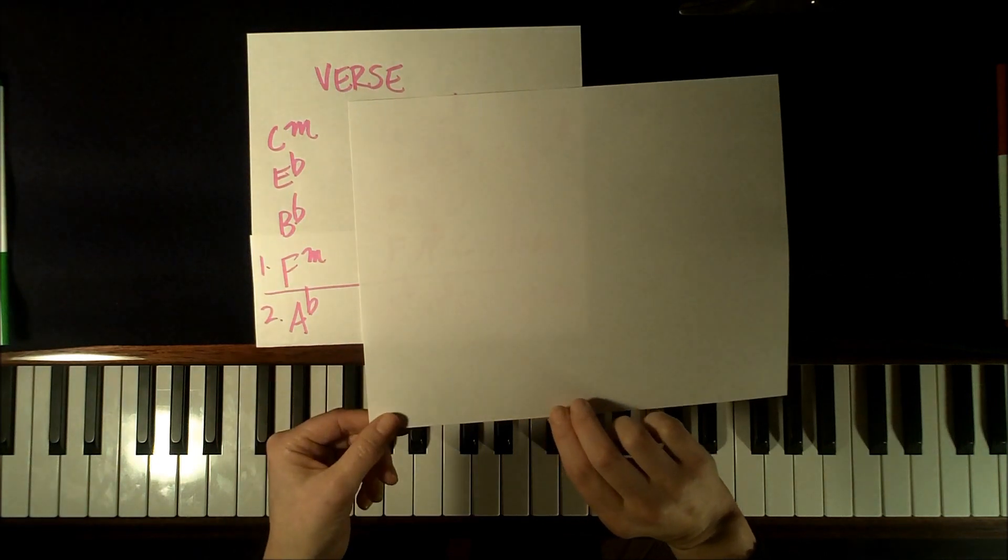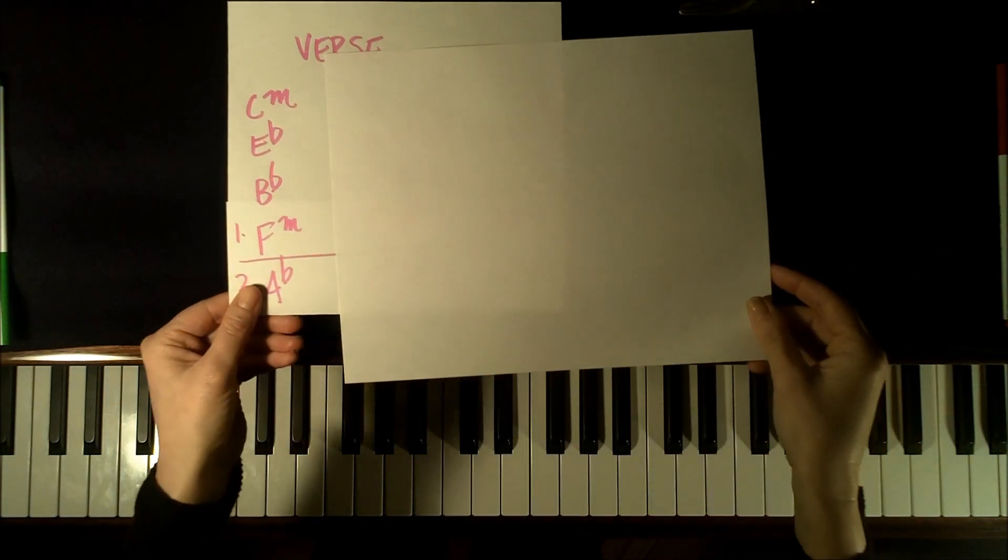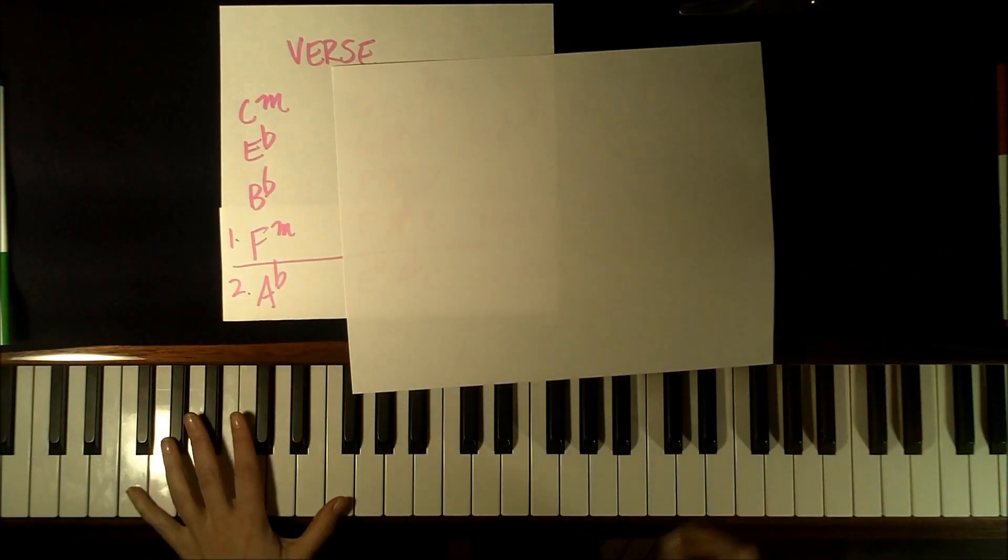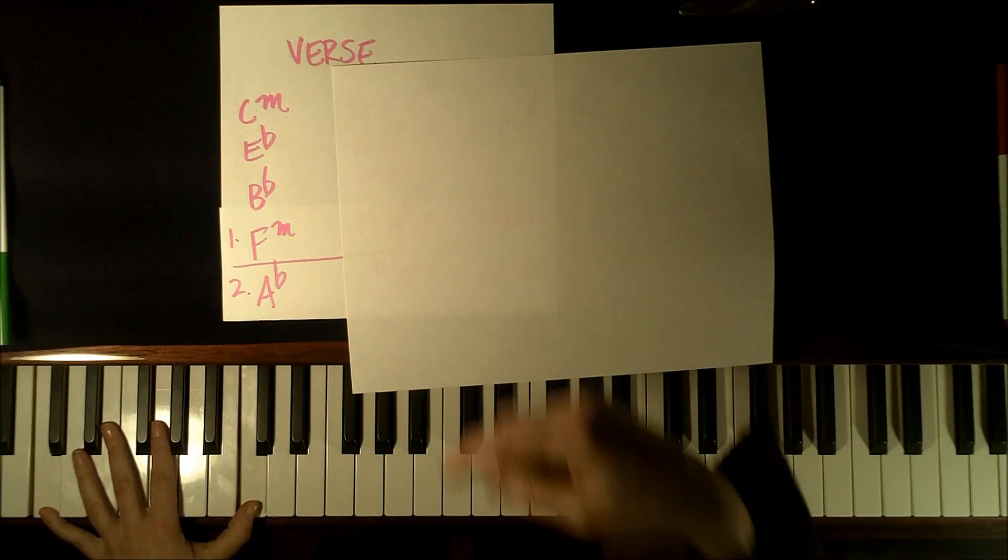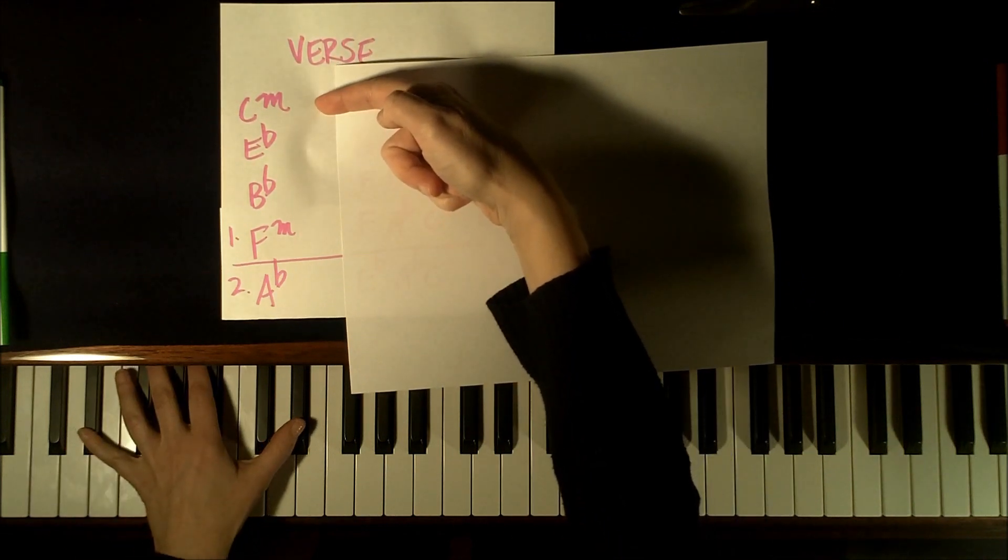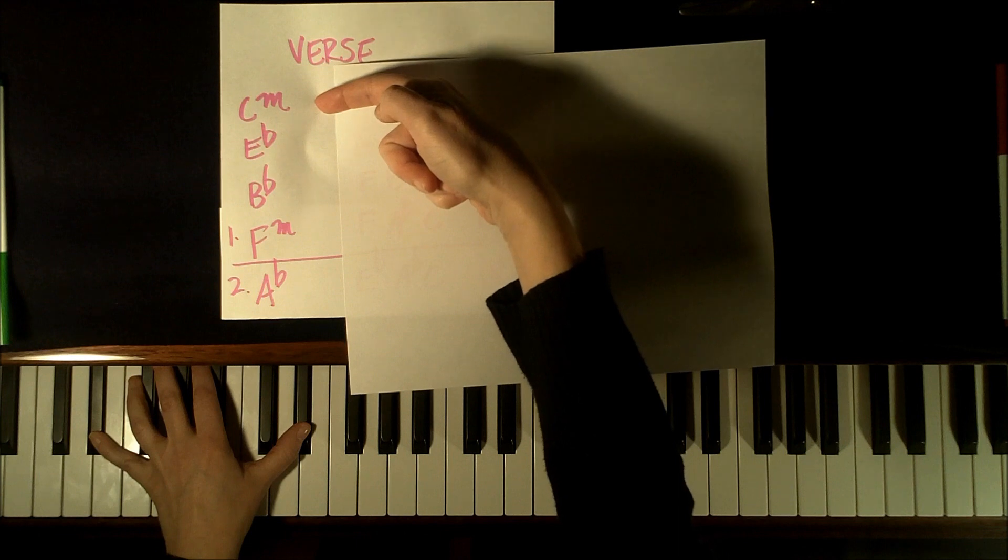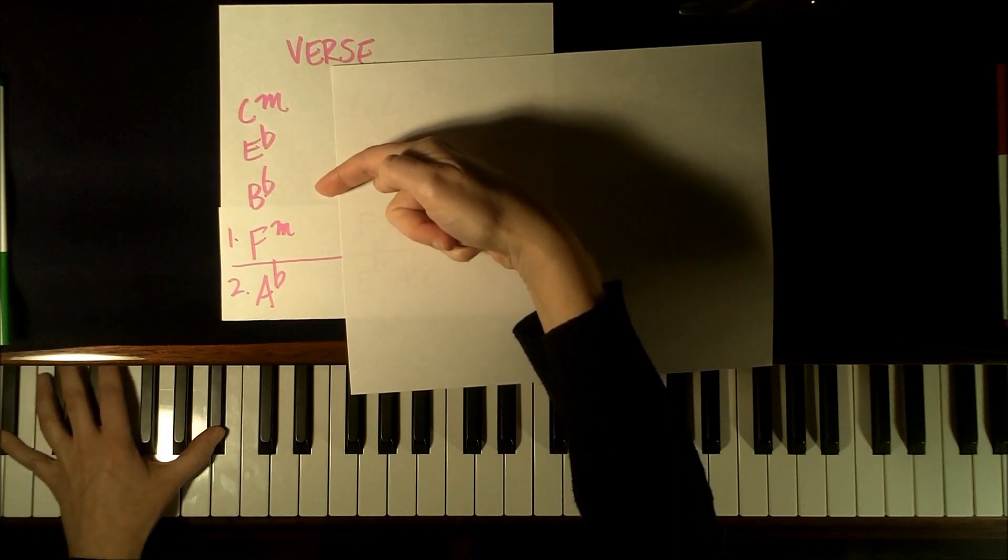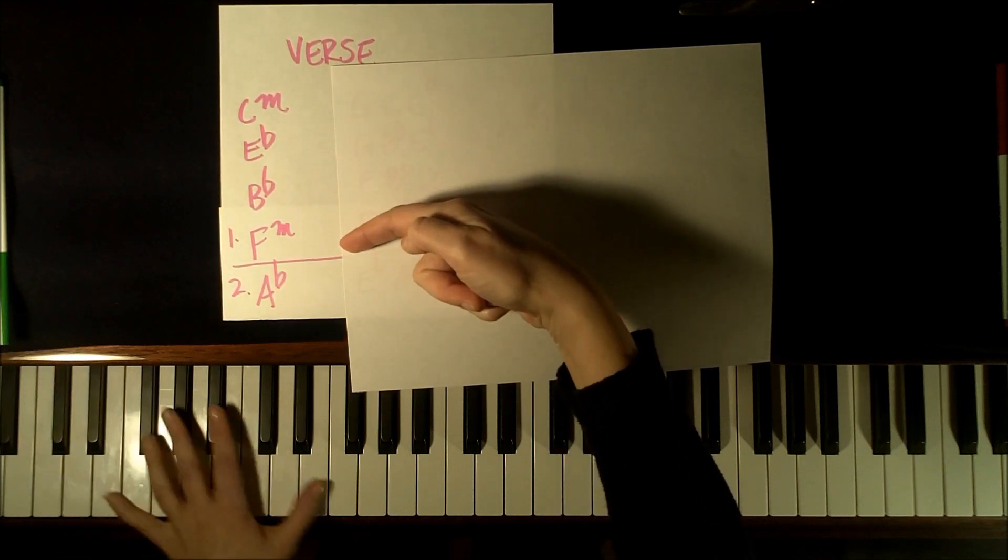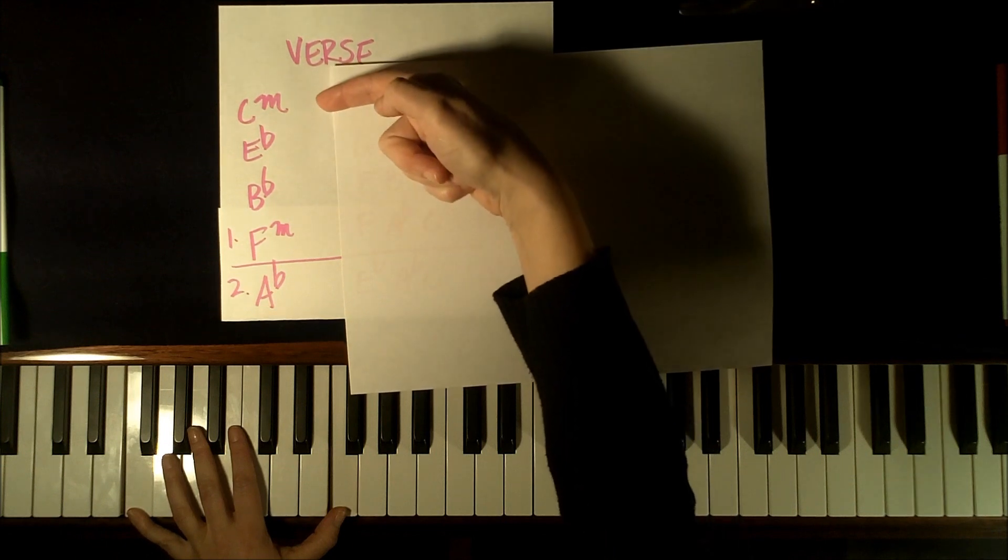As we play through the verse of this piece, we are going to use the left-hand octave of C for the C minor chord, then we're going to go to Eb, and then Bb, and then F, and it repeats.